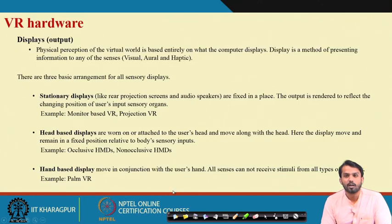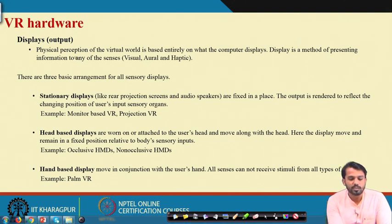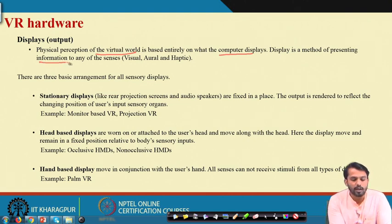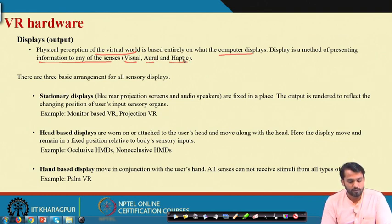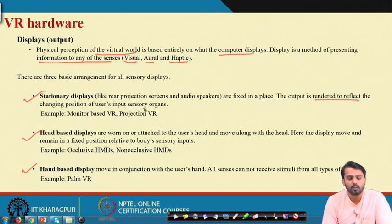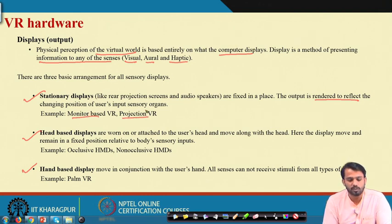What are the VR hardware components? Let us look at displays first. Displays are the physical perception of the virtual world — entirely based on what the computer displays. A display is a method of presenting information to any of the senses: visual, audio, or haptic. There are three kinds of display systems: stationary displays, head-based displays, and hand-based displays. Stationary displays are fixed in place, and the output is rendered to reflect the changing position of the user's input sensory organ — basically monitor-based or projection-based using different 3D projection systems.